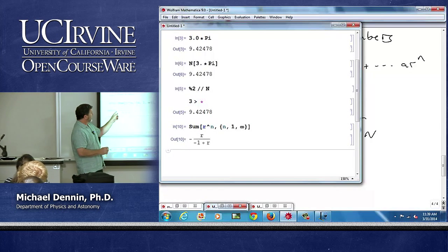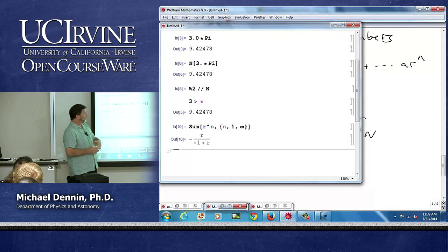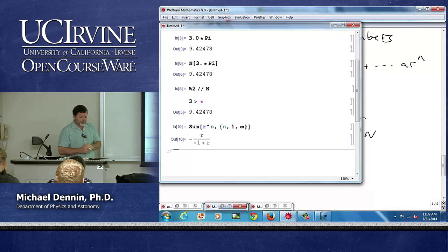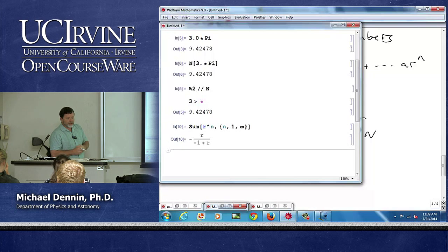Notice I get minus r over minus one plus r. We'll see that that actually is the answer for this limit when we look at it in more detail. Actually no, I'm sorry.